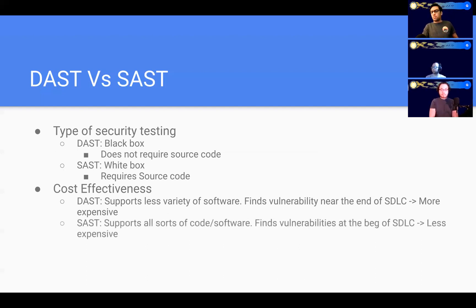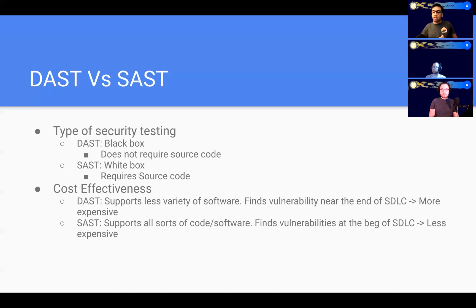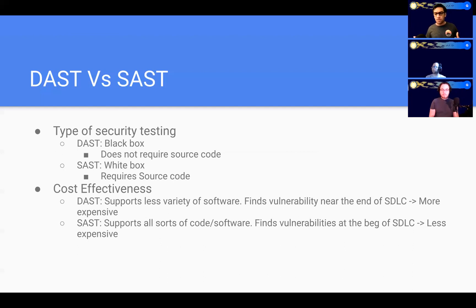Now, about SAST: it supports all sorts of code and software because all it does is look at the code itself — it doesn't need any special runtime or environment. It often finds vulnerabilities as the software developers are coding, near the beginning of the SDLC. So as they're coding, the SAST tool finds vulnerabilities and they're able to fix them right there on the spot, making it less expensive because you're using less time and money.